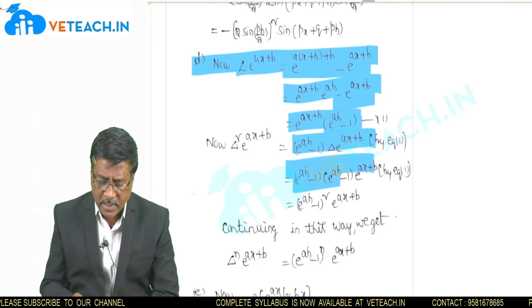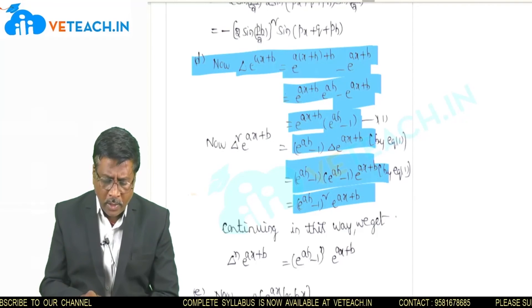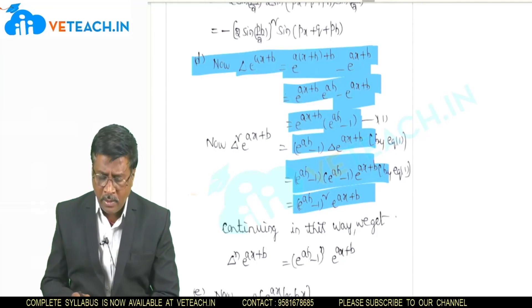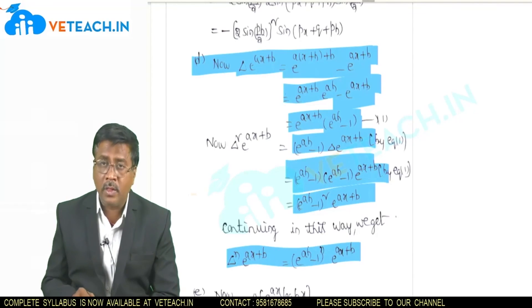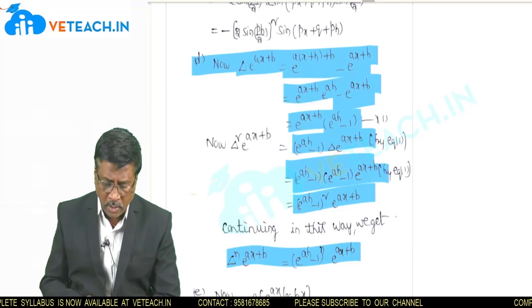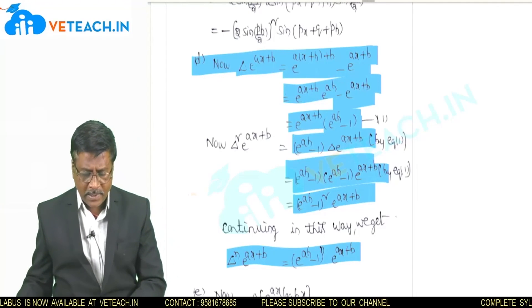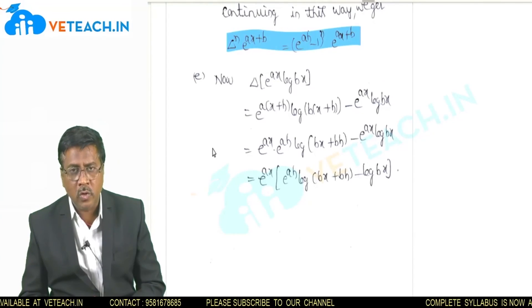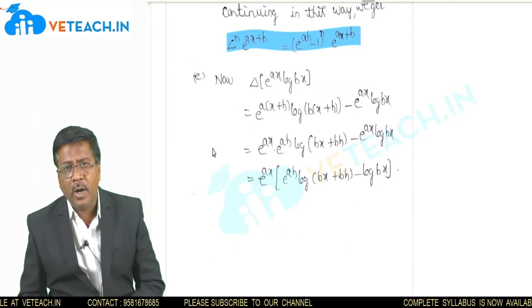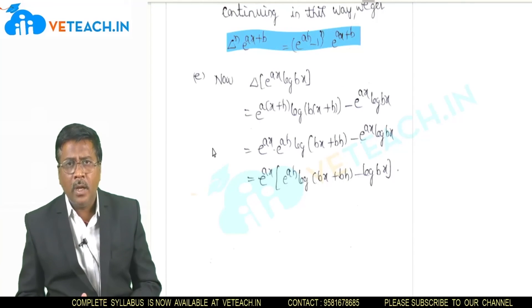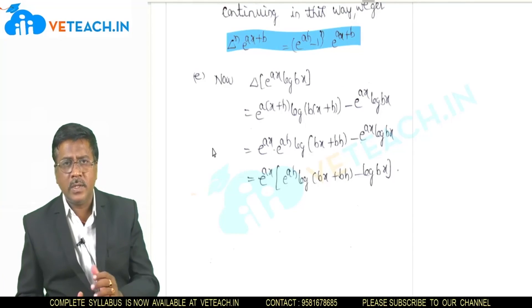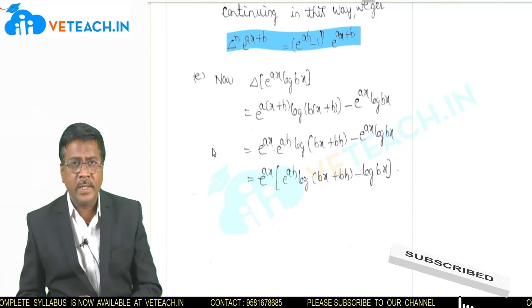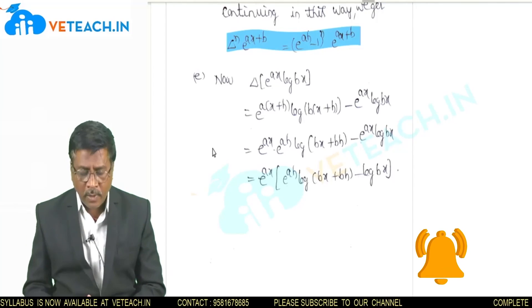Therefore, for the second forward difference and generalizing: the nth forward difference of e^(ax+b) is (eᵃʰ−1)ⁿ · e^(ax+b). In a similar way you can solve the remaining problems. These types of problems are asked in university examinations. Backward difference and central differences can be handled similarly. Thank you for kindly listening.